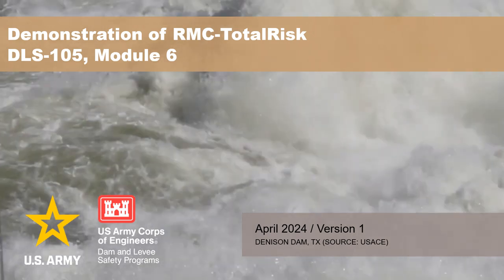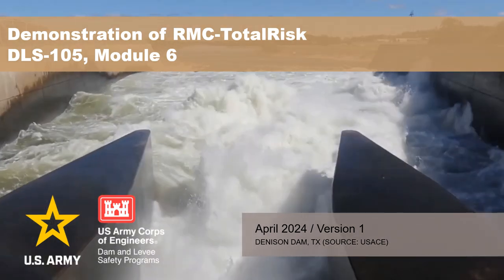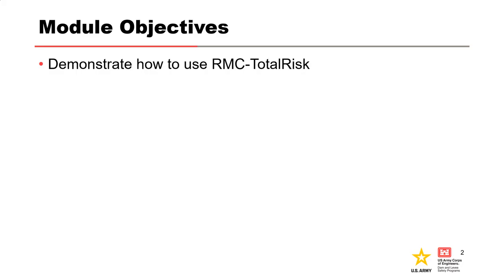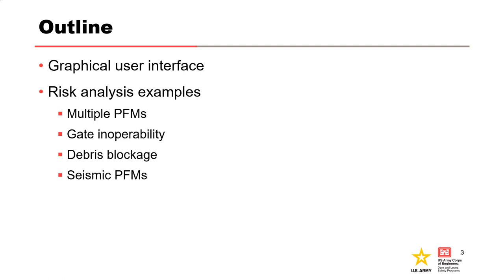Welcome to Module 6 of DLS-105, Demonstration of RMC Total Risk. RMC Total Risk is a quantitative risk analysis software that can be used to perform risk calculations for dam and levy safety risk assessments. Although this presentation will not fully cover all features and capabilities, after this presentation, participants should be able to demonstrate how to use RMC Total Risk to perform calculations for most risk assessments. We'll start with the graphical user interface before stepping through four risk analysis examples covering standard risk assessment, gate inoperability, debris blockage, and seismic potential failure modes.